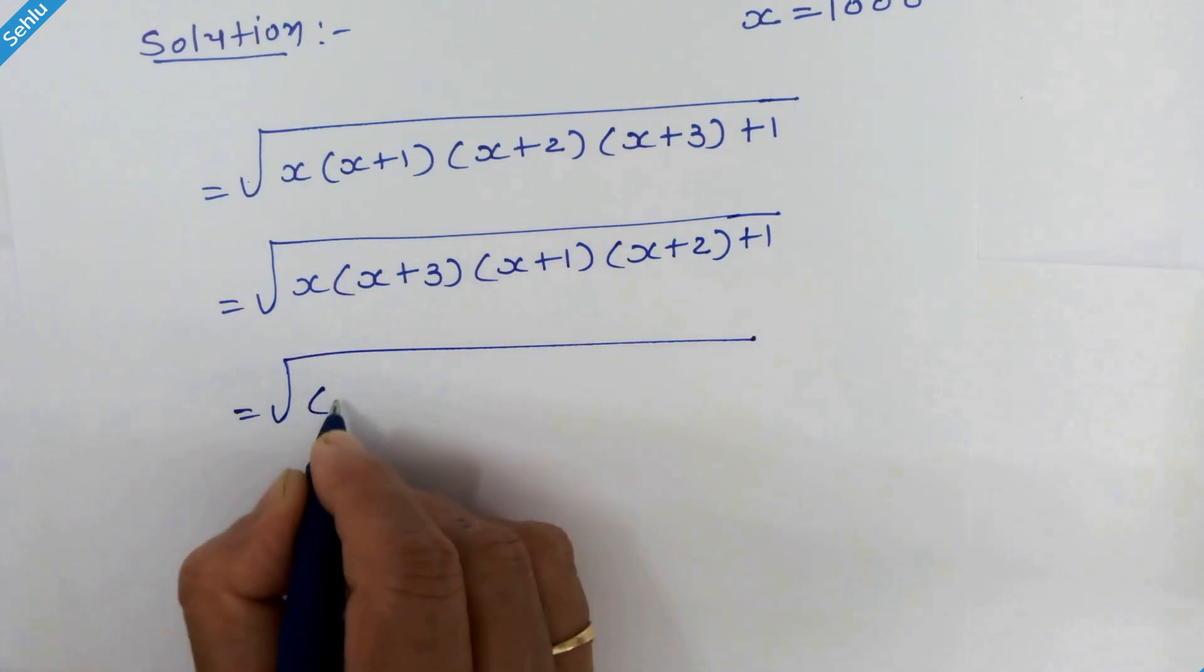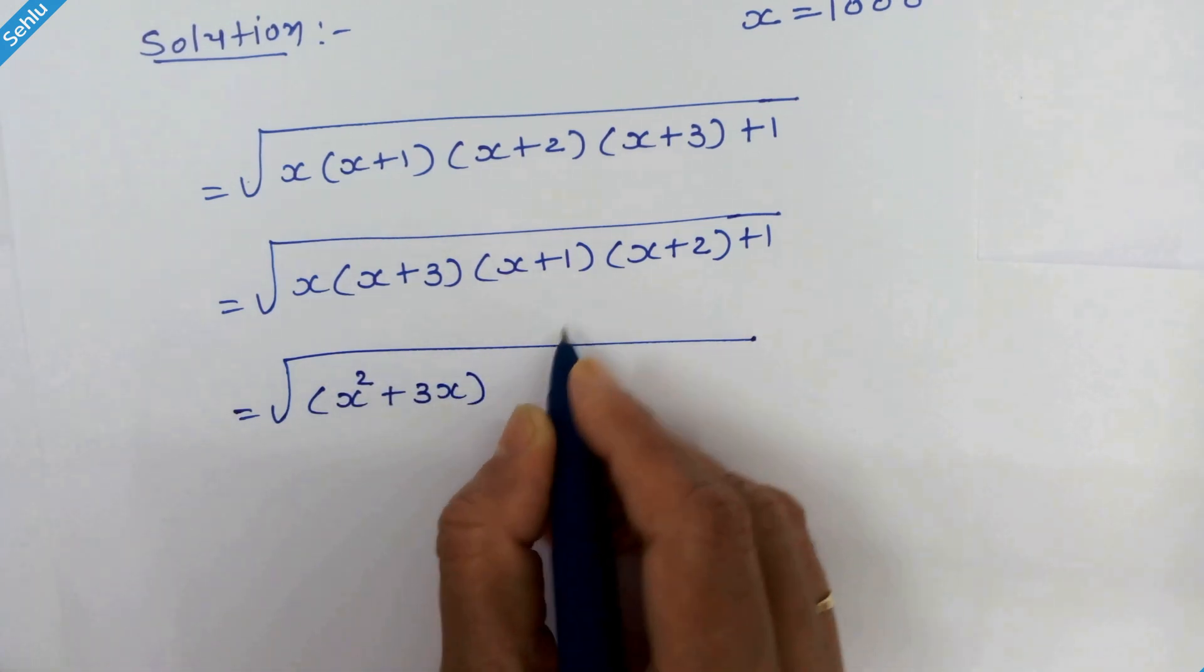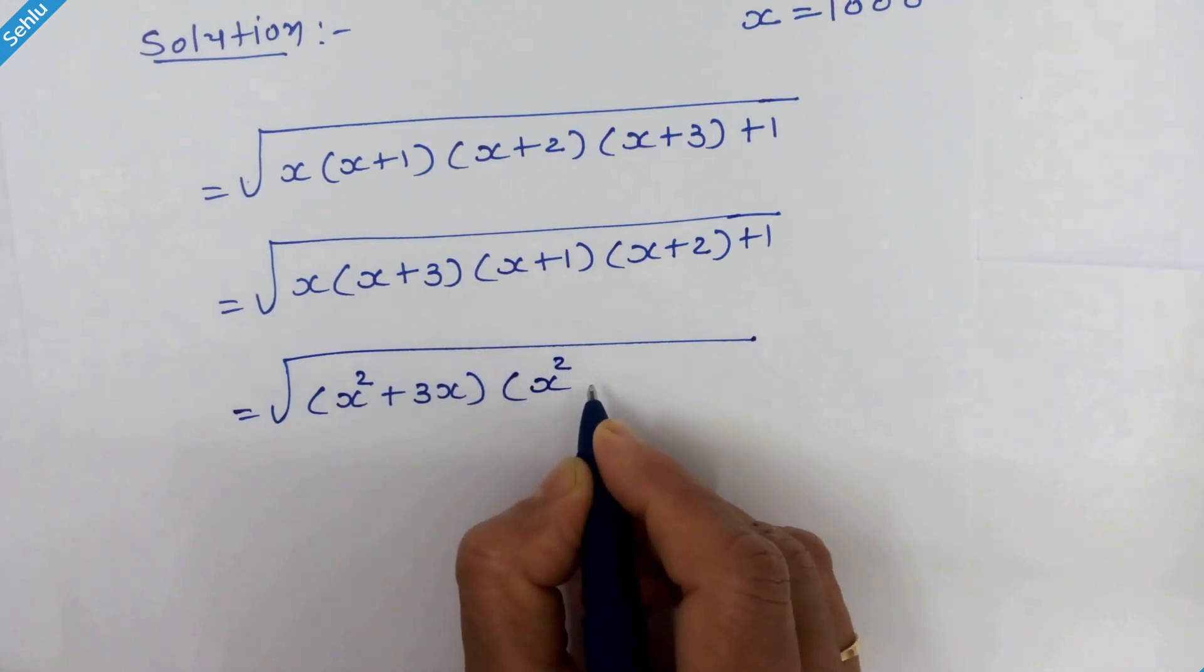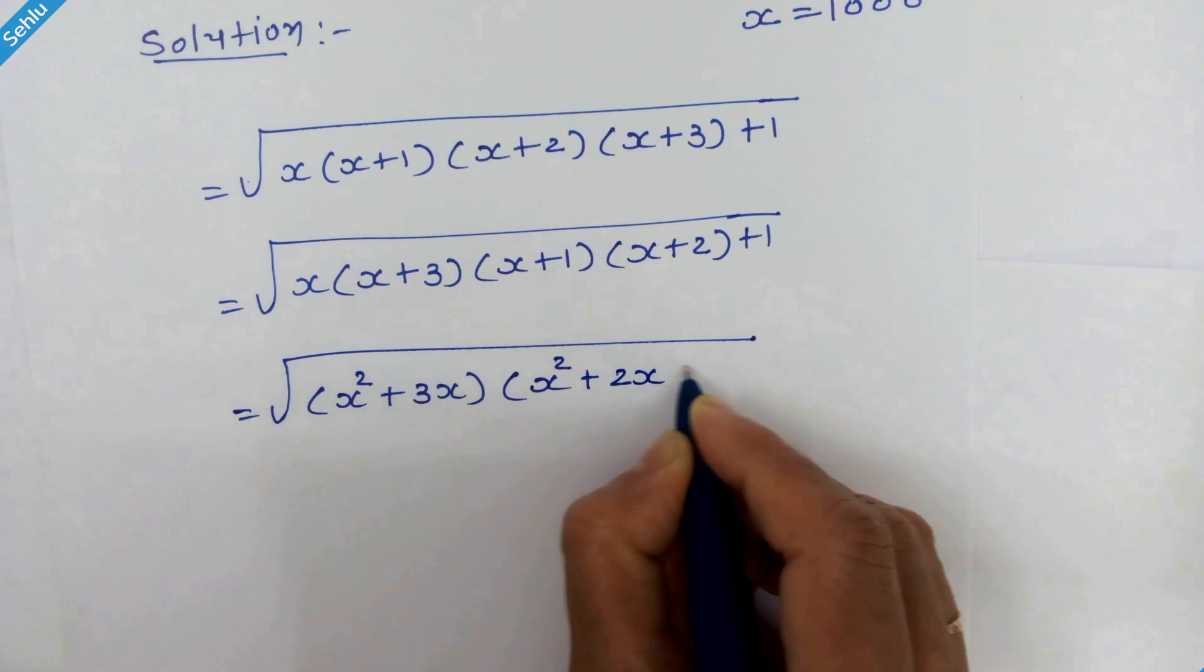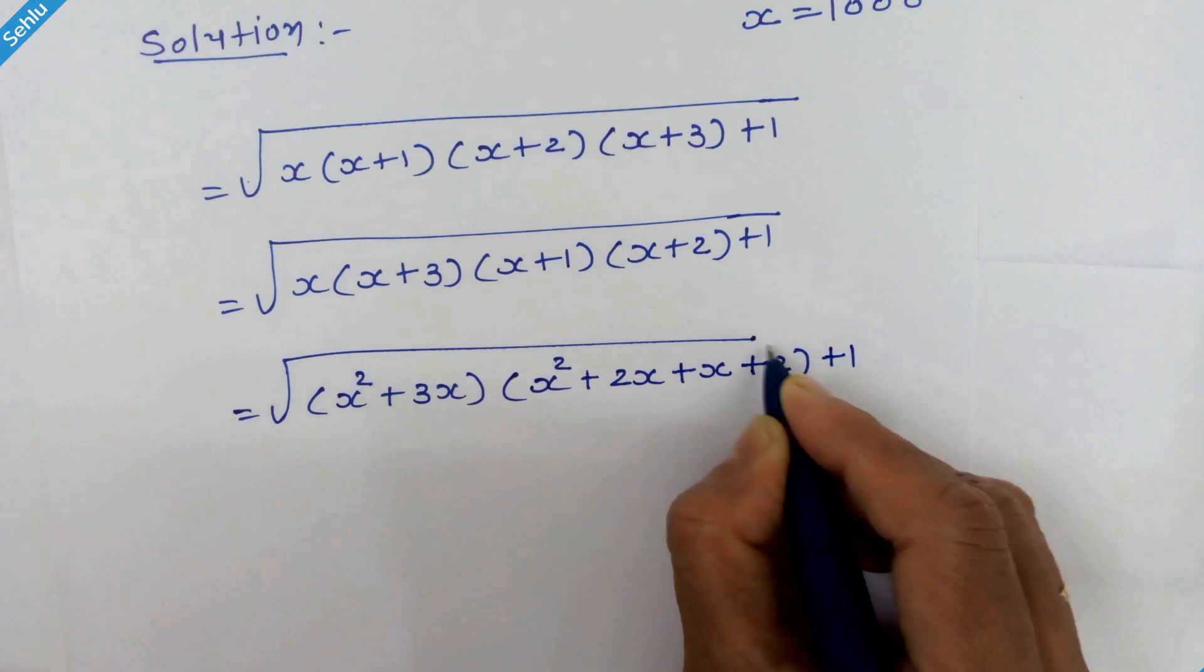So we have x squared plus 3x, and we will multiply these two brackets. So we have x squared plus 2x plus x plus 2, plus 1.